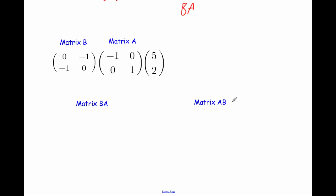Computing matrix BA: first row times first column — 0 times minus 1 is 0, minus 1 times 0 is 0, giving 0. First row times second column — 0 times 0 is 0, minus 1 times 1 is minus 1, giving minus 1. Second row times first column — minus 1 times minus 1 is 1, 0 times 0 is 0, giving 1. Second row times second column — minus 1 times 0 is 0, 0 times 1 is 0, giving 0. So matrix BA is 0, minus 1, 1, 0.